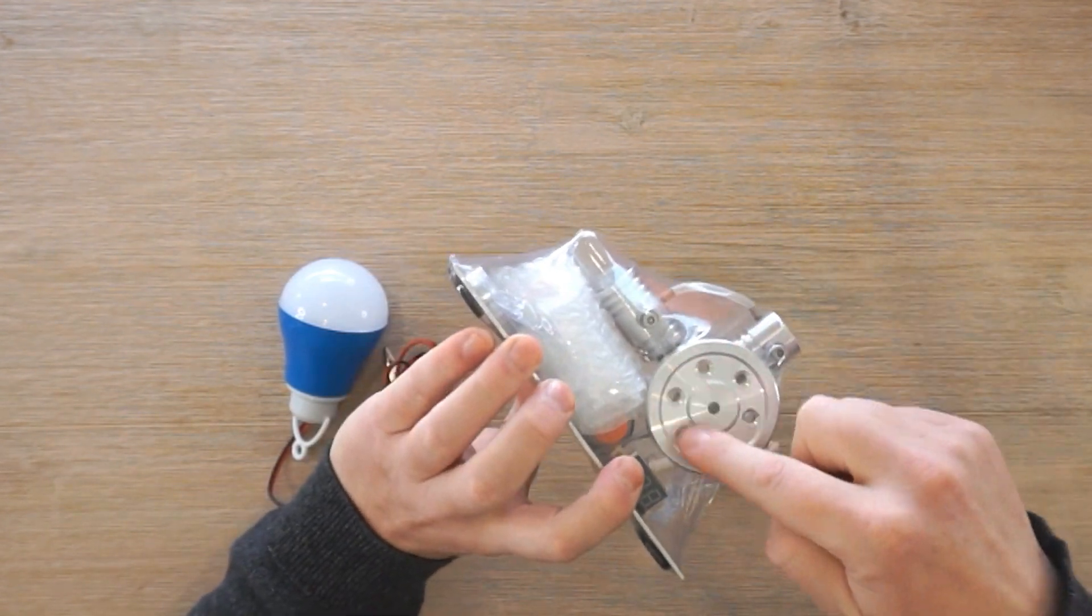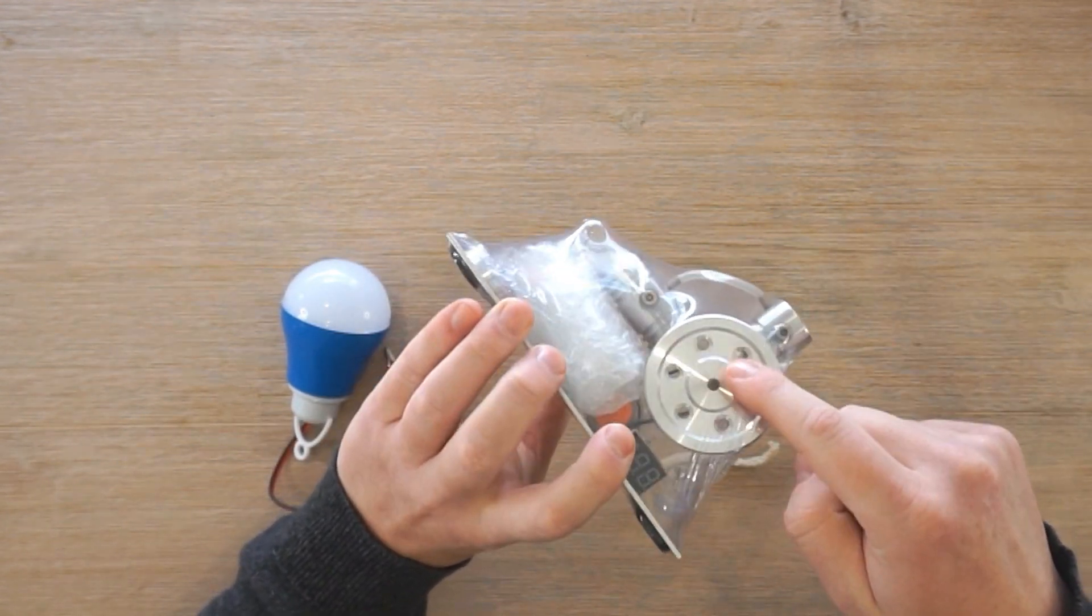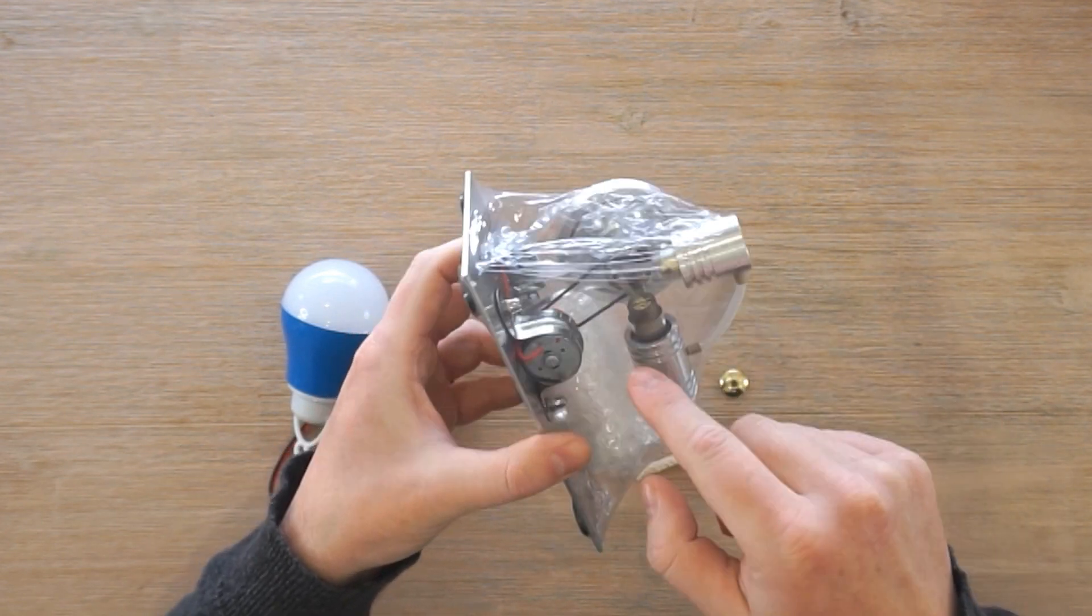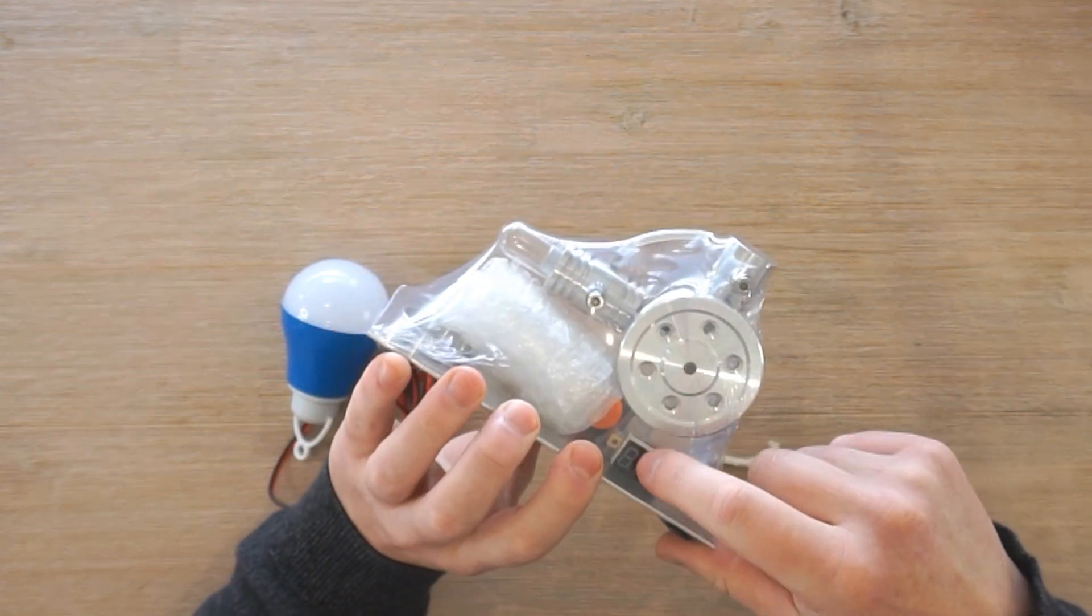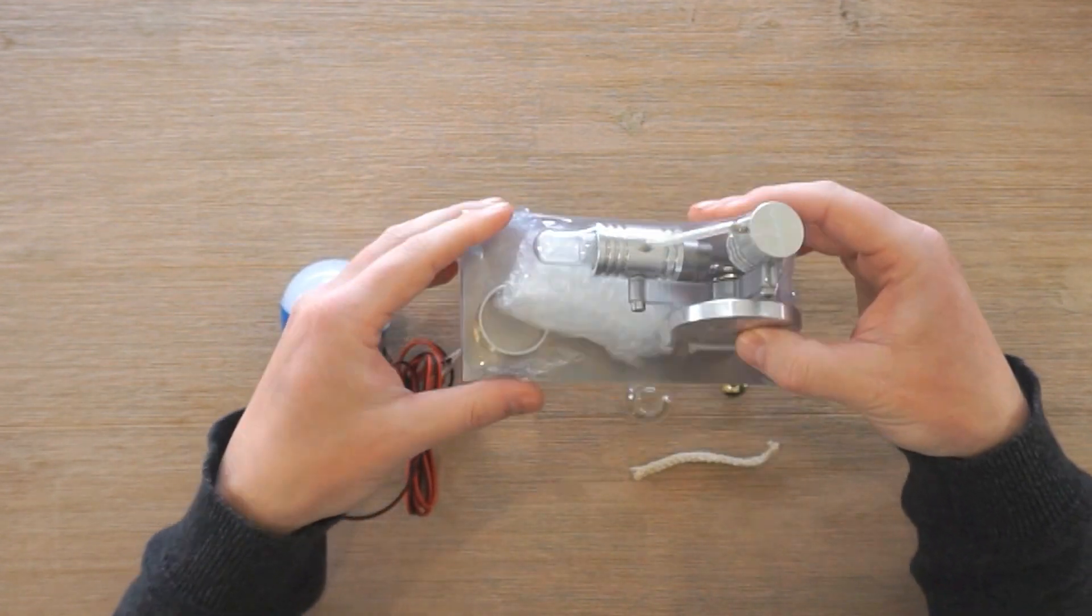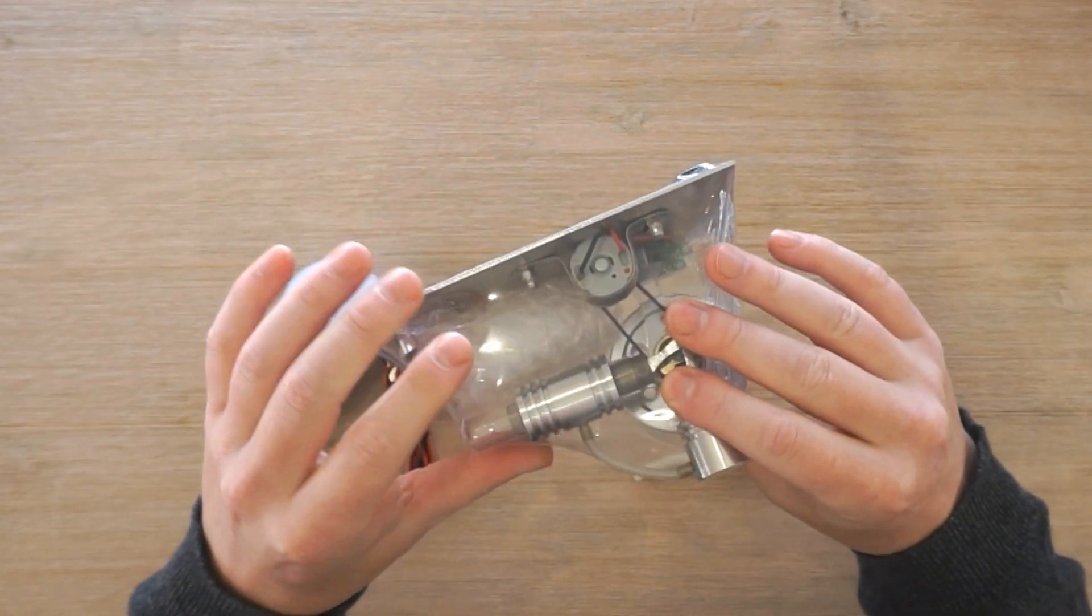And that's connected to this generator through that black belt. The generator is connected to this voltmeter so you can see exactly how much voltage is being generated. So let's open this up and take a closer look.